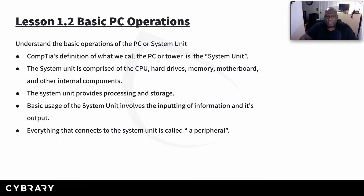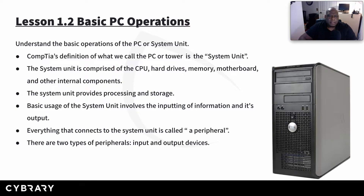Everything that connects to the system unit is called a peripheral. So we have the system unit that does the basic inputting and outputting of information, and everything that we connect to that system unit is called a peripheral. There are two types of peripherals: input and output devices, and we're going to talk about those in a little bit more detail so you've got a clear understanding.